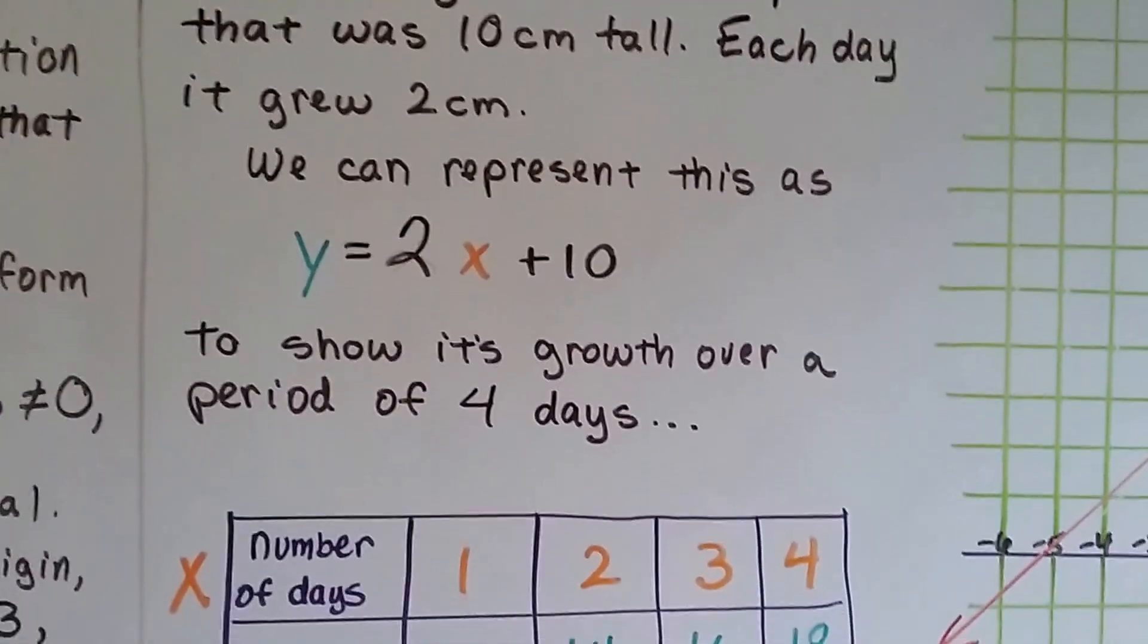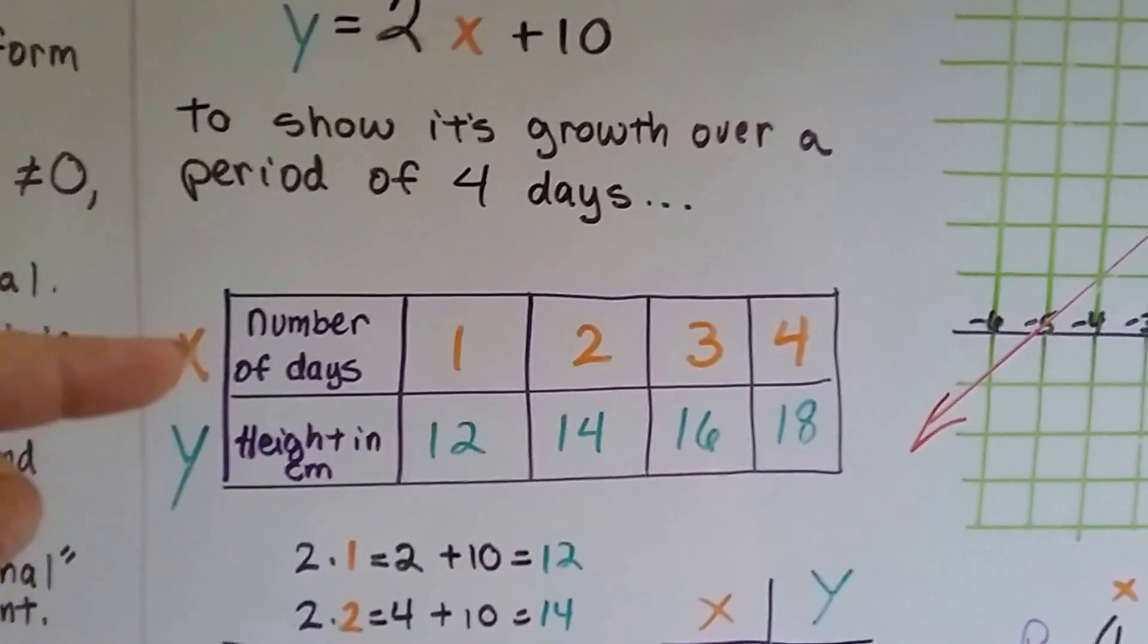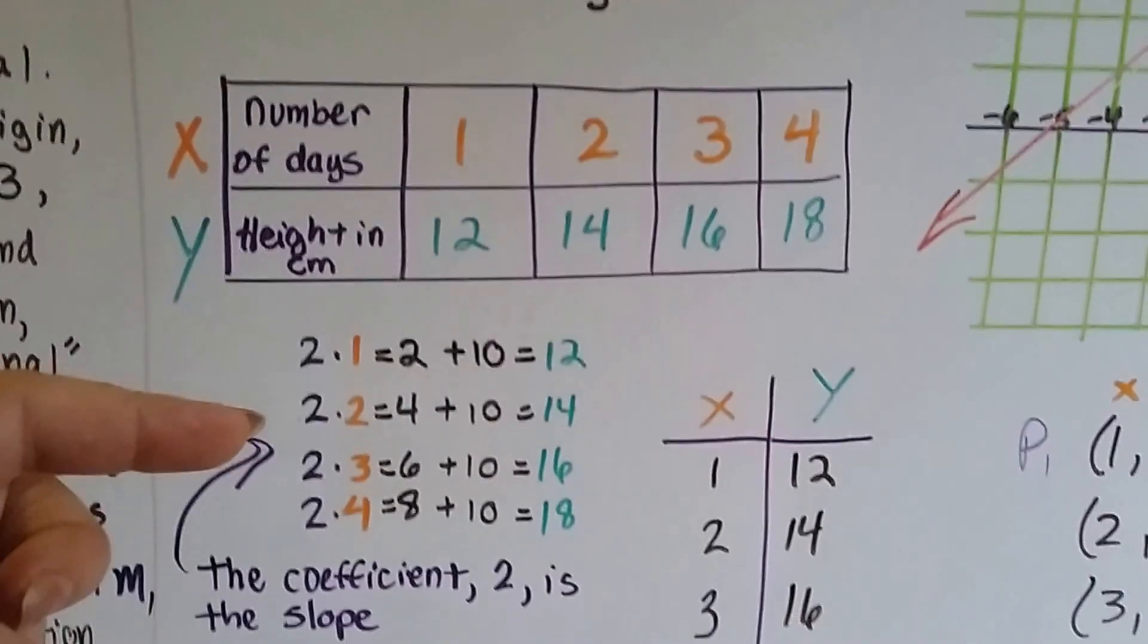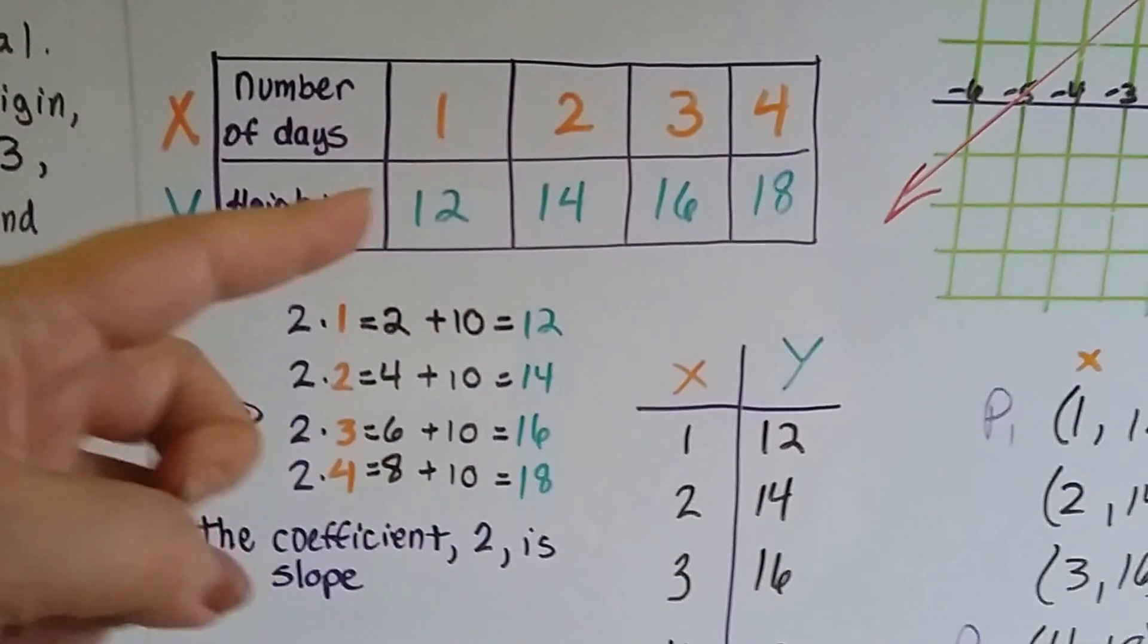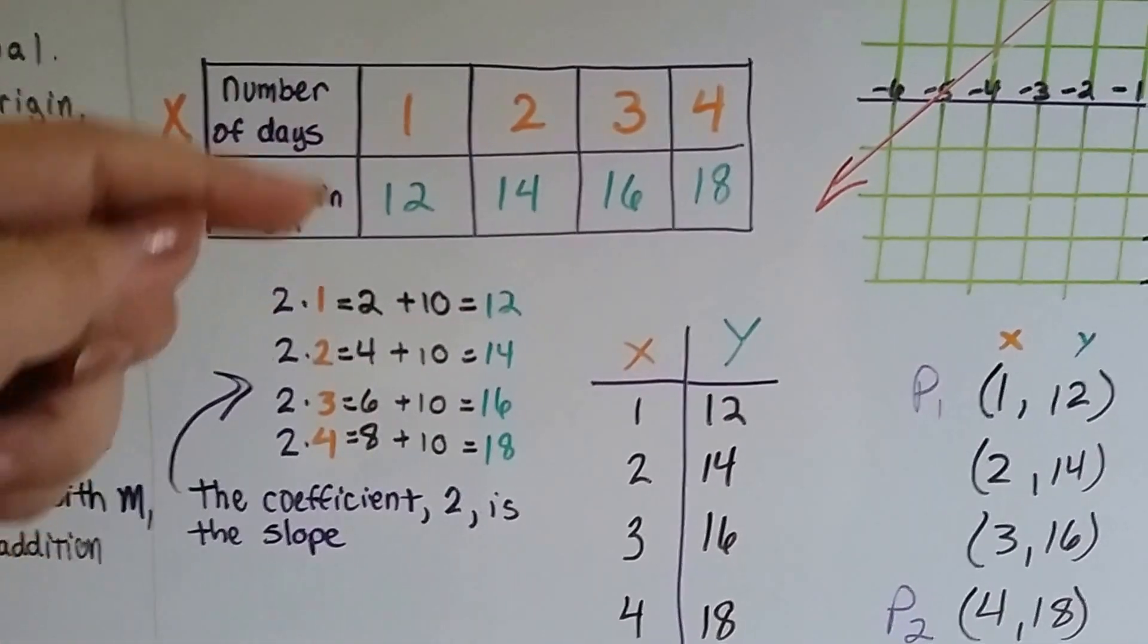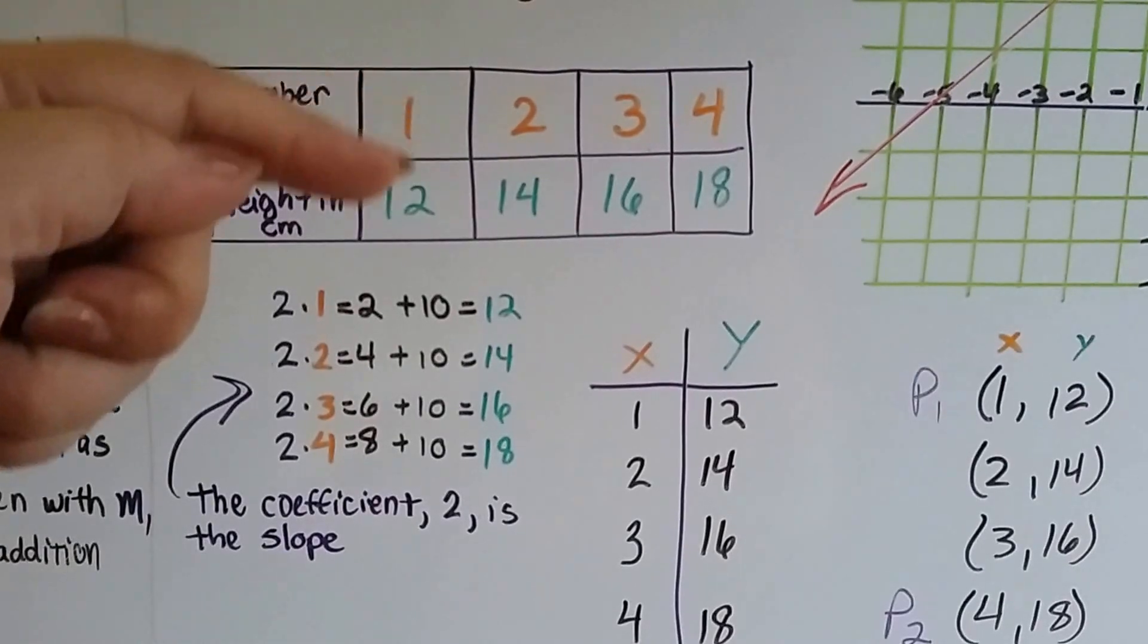We can show its growth over a period of 4 days. X is the number of days, y is the height in centimeters. We can fill in this table with our x and y values. All we have to do is multiply by 2 and add the 10.